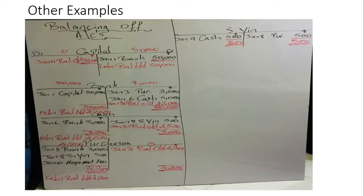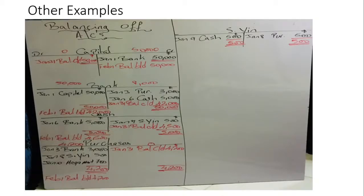Here are some other examples of accounts as they look when balanced off. Notice the capital account — the balance carried down is on the debit side instead of the credit side. Also, look at the S-in account — you will notice that this account does not have a balance because the debit side is equal to the credit side, and that is very important to identify.